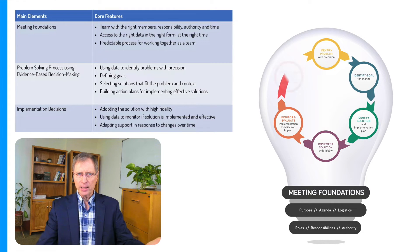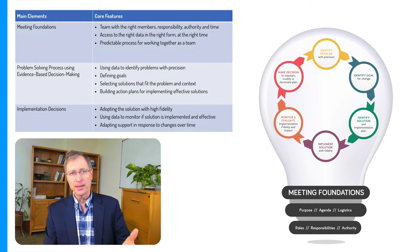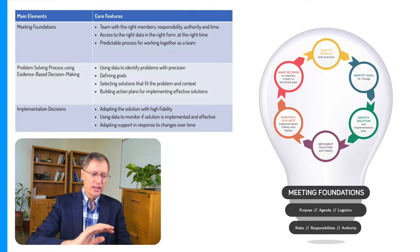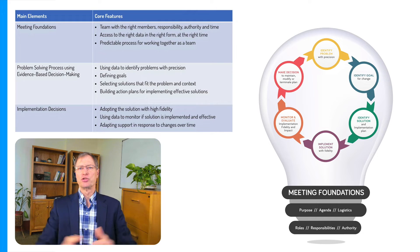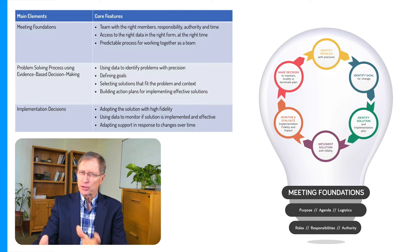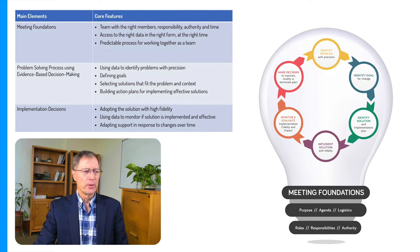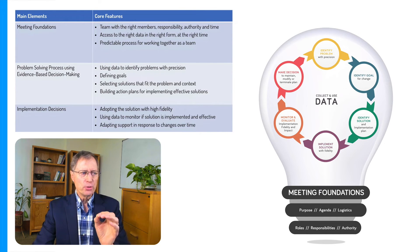Then we ask: has it produced real change in student outcomes? The final part is — have we produced change that's adequate? Is it enough? Should we move on, should we adapt? Oftentimes when you're doing interventions in schools, the first effort is pretty good but not quite perfect, so you want adaptations. This point in the TIPS process is where you use the data to produce that change.